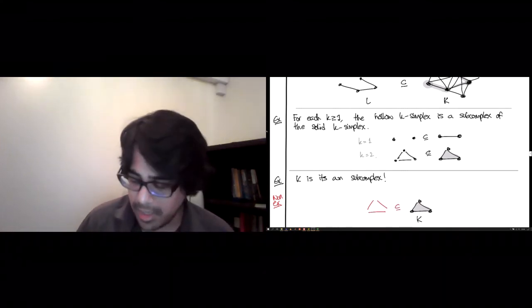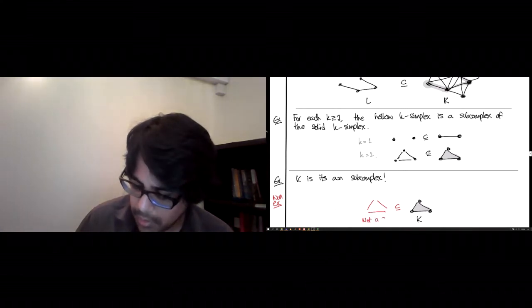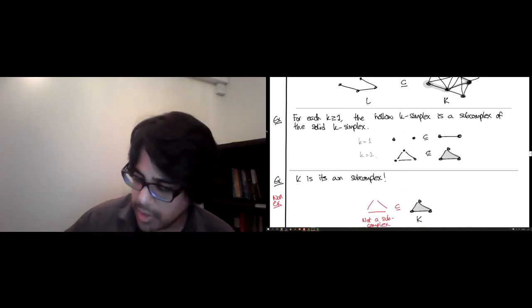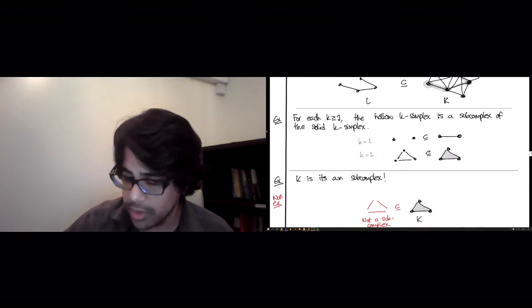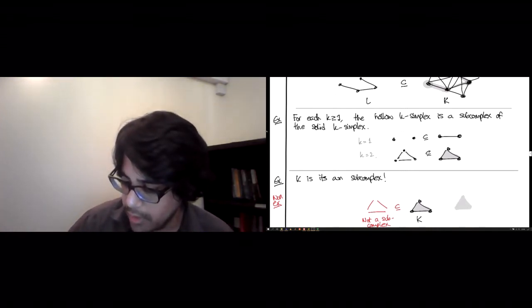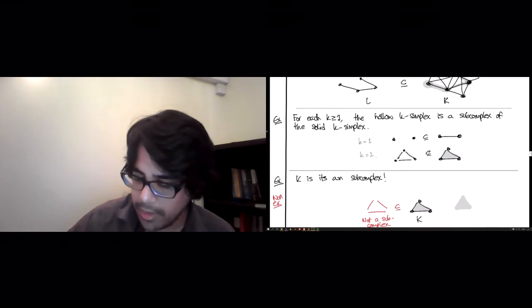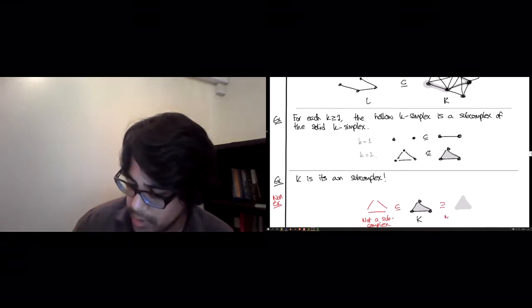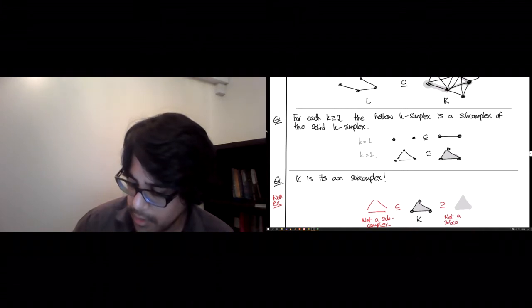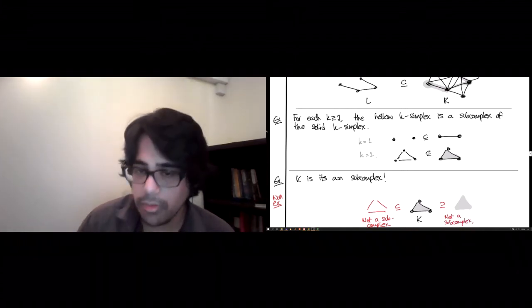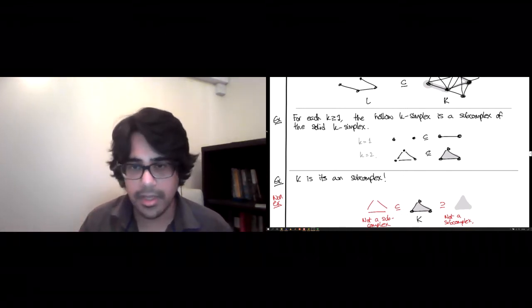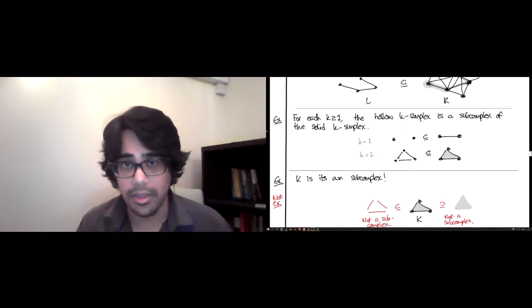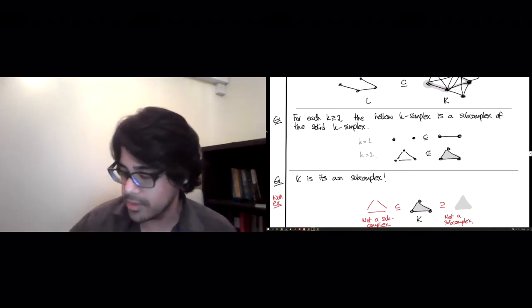If you took the three edges, that is a subset, but this is not a subcomplex. Similarly, if you forgot about the 0 and the 1 simplicies and just looked at the triangle without anything else, this is also a subset, but not a subcomplex. And the reason for both is the same. You can find simplices whose subsets are not present. So they're not simplicial complexes in their own right. Therefore, they cannot possibly be subcomplexes of K.